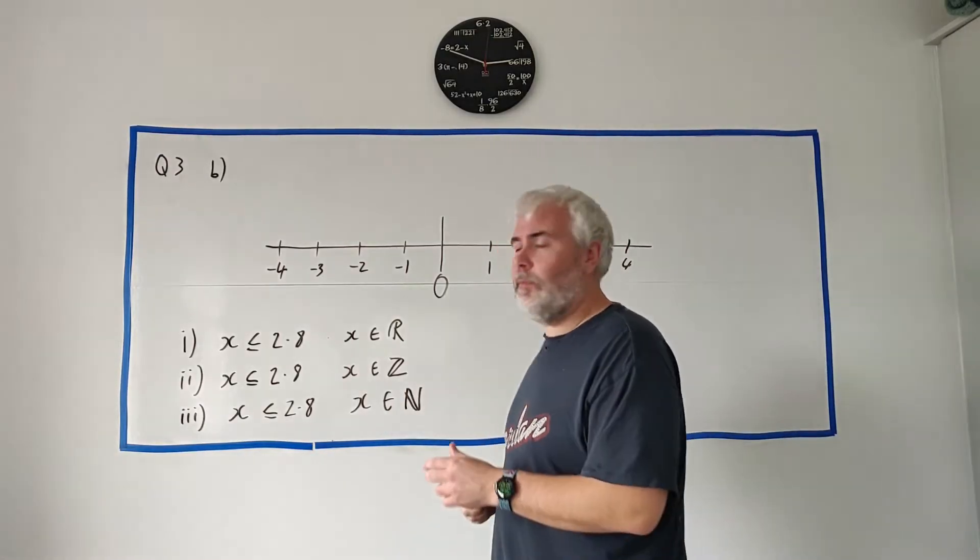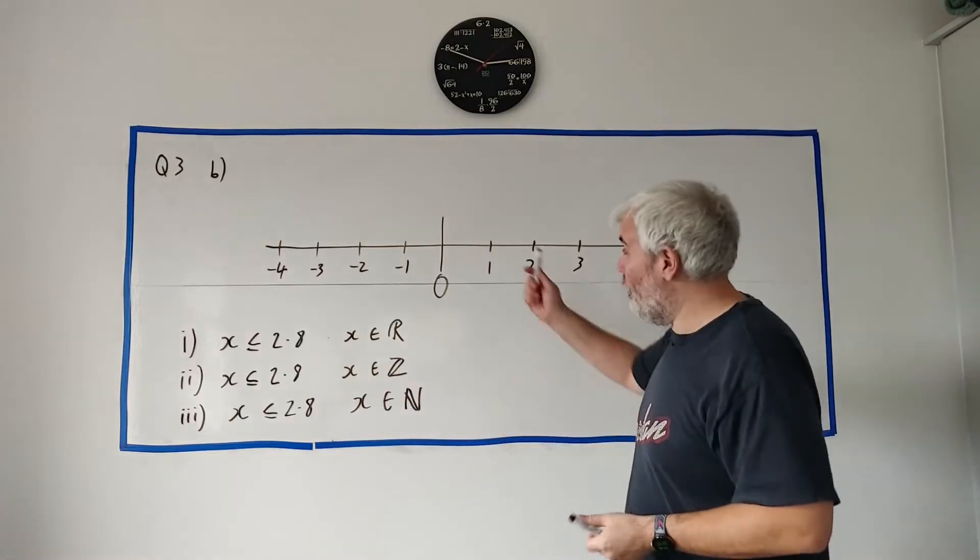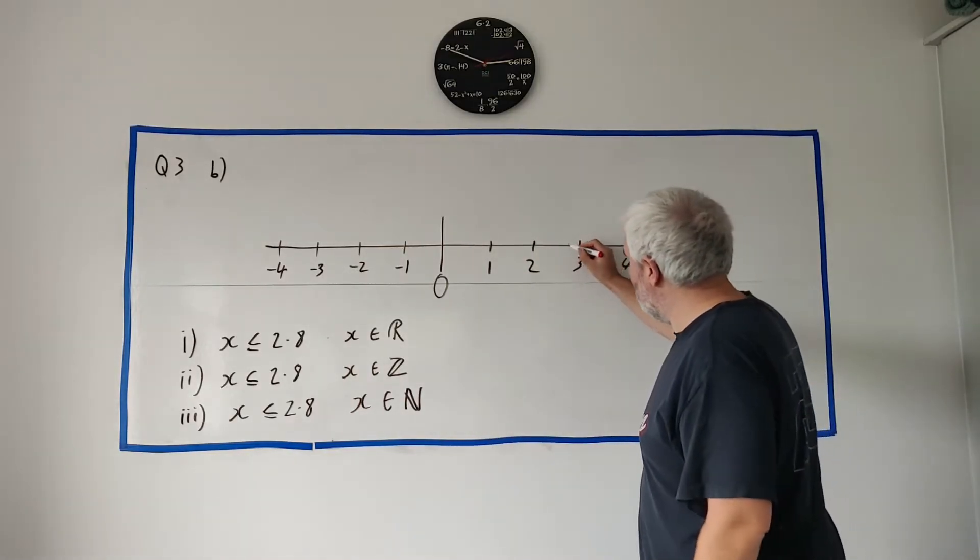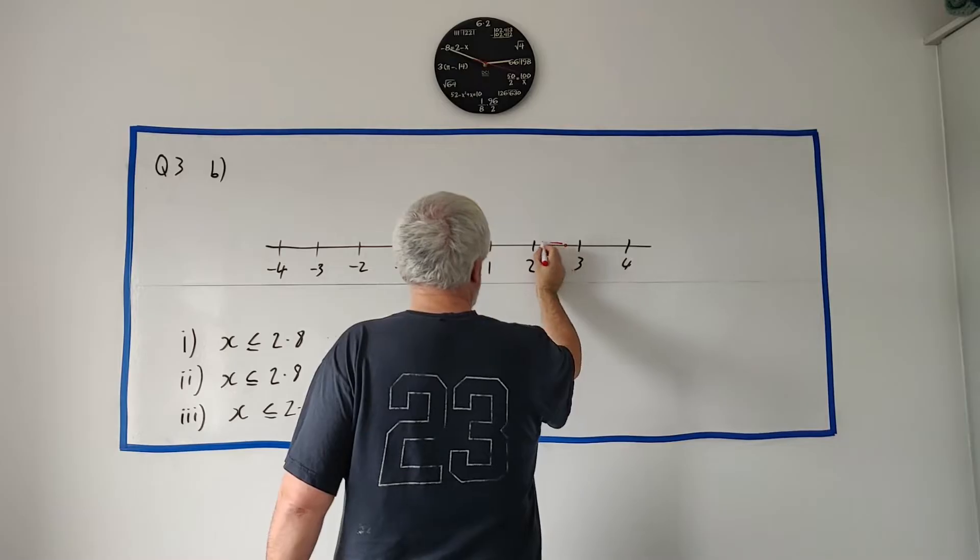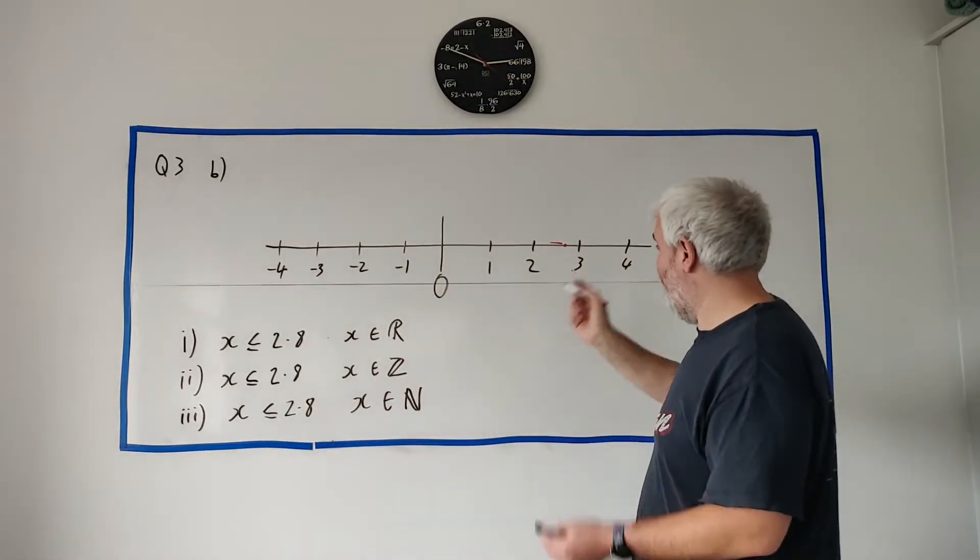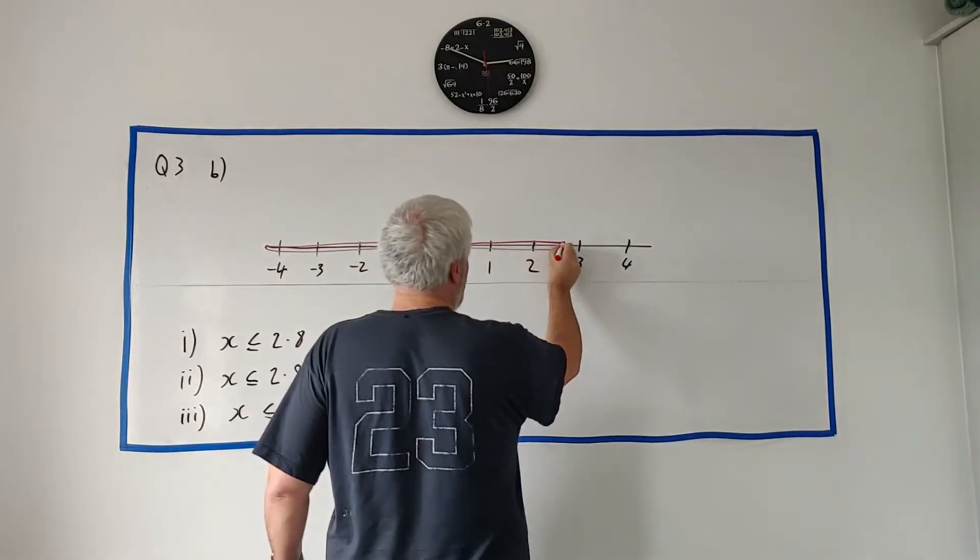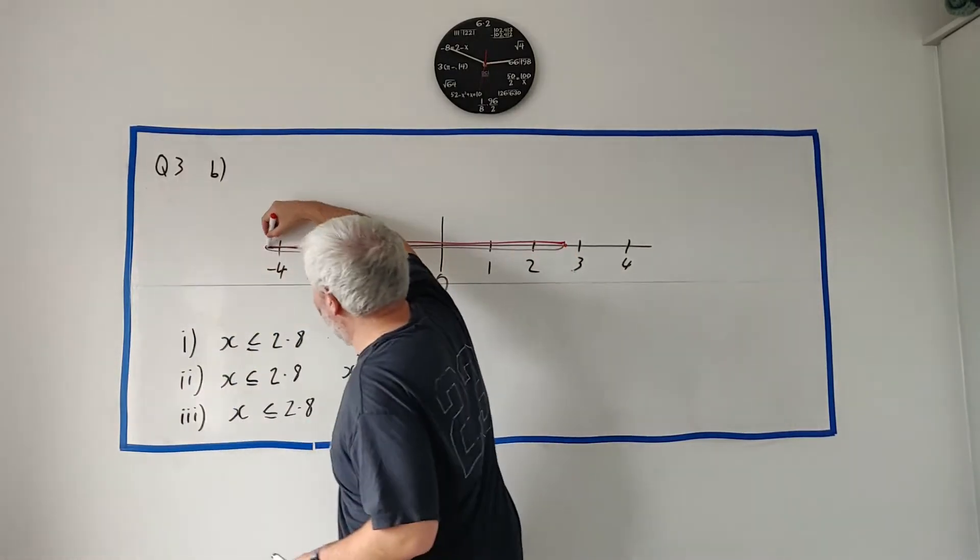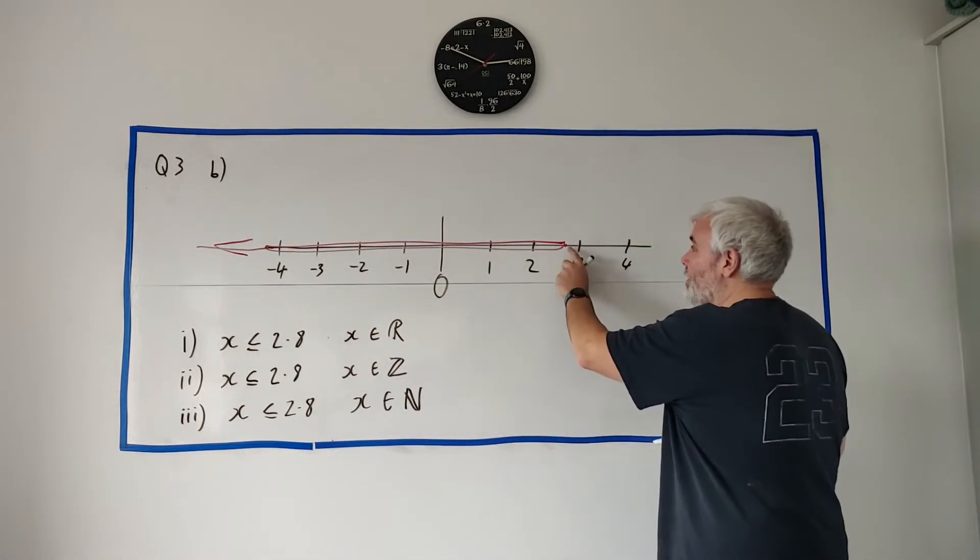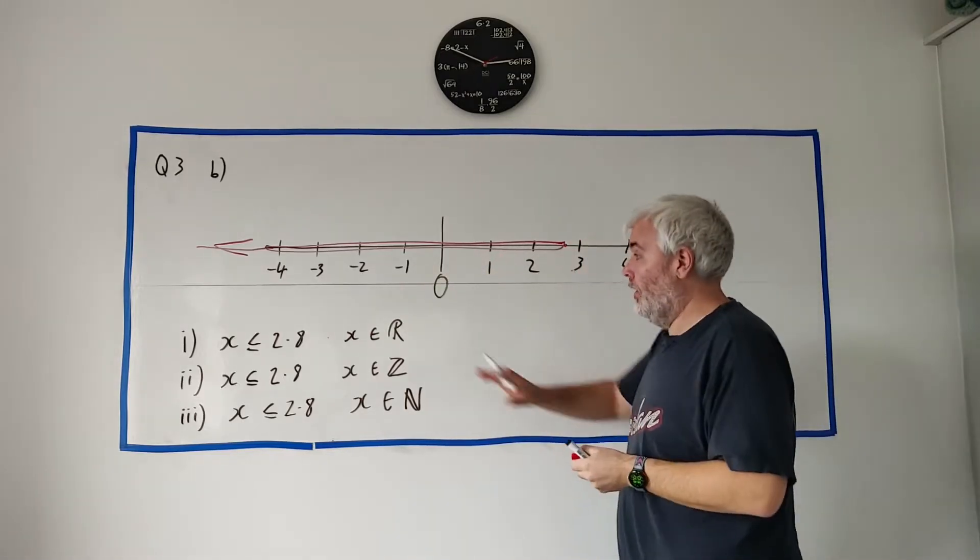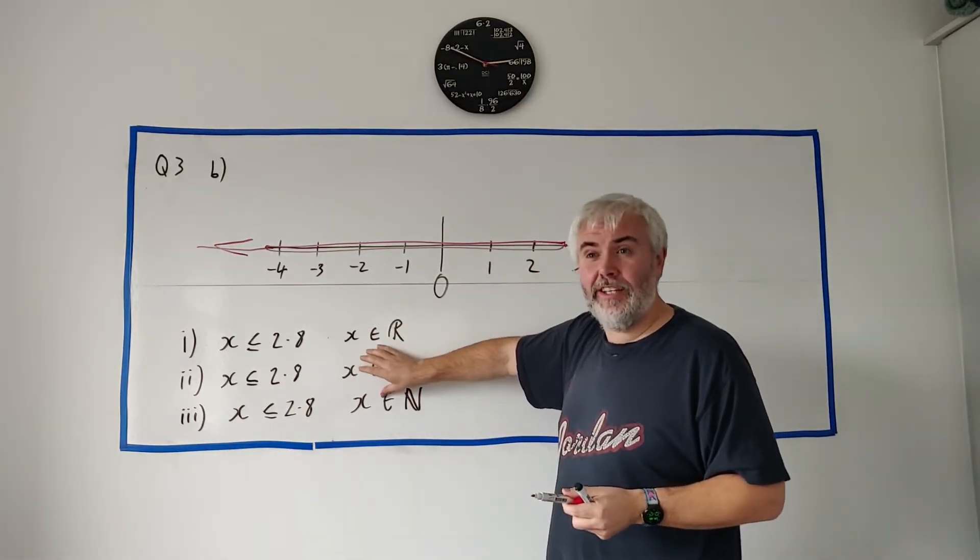They ask x is less than or equal 2.8 and x is an element of the real numbers and they want us to put that in up here. So that would be something like this. First we'd have to find where 2.8 is, it's about here. I'll make a bit of a mess so you can see easily where I'm going all the way down. This is going forever by the way. Sometimes you might put an arrow there. They're not going to be too strict on that. They just want to see something like this. They want to see start at 2.8 going that way. That's all they want to see.